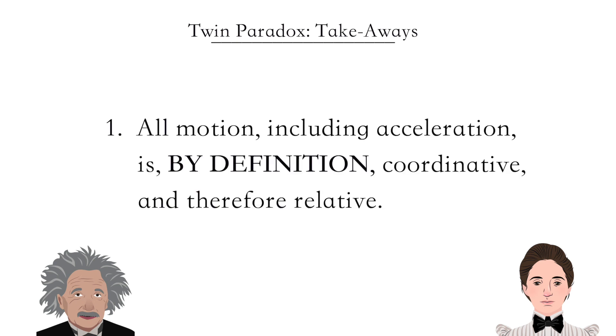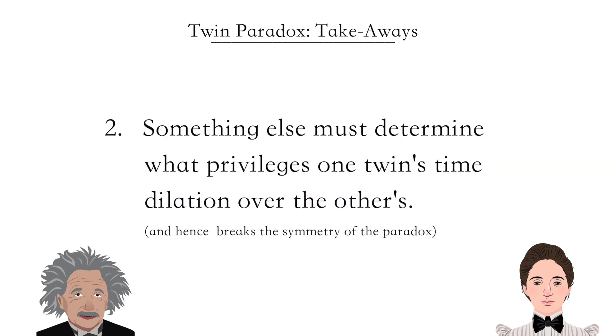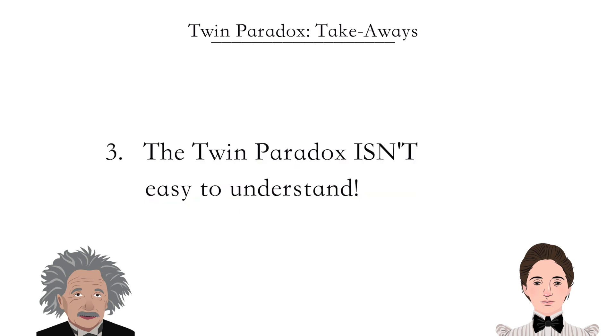One, all motion, including acceleration, is by definition coordinative and therefore relative. Two, something else must determine what privileges one twin's time dilation over the others. And finally, three, the twin paradox isn't easy to understand. It's difficult, and it takes work, and anyone who tells you otherwise probably doesn't understand it themselves.